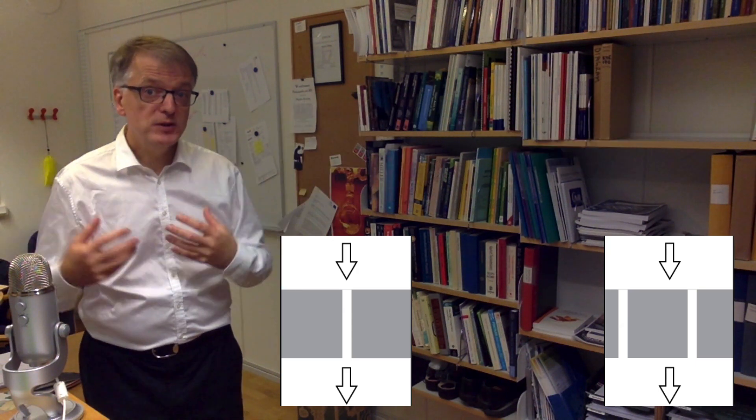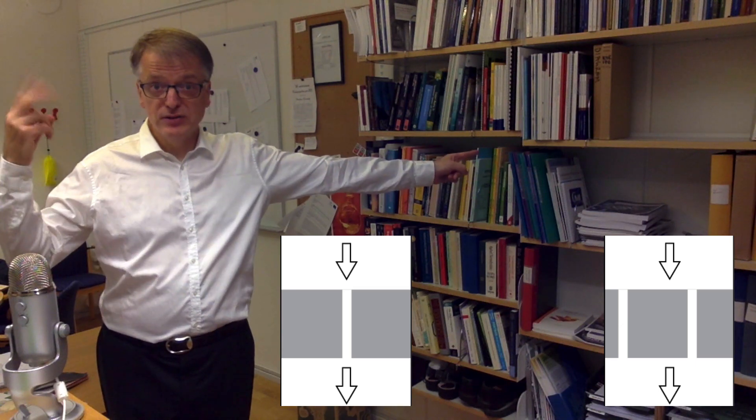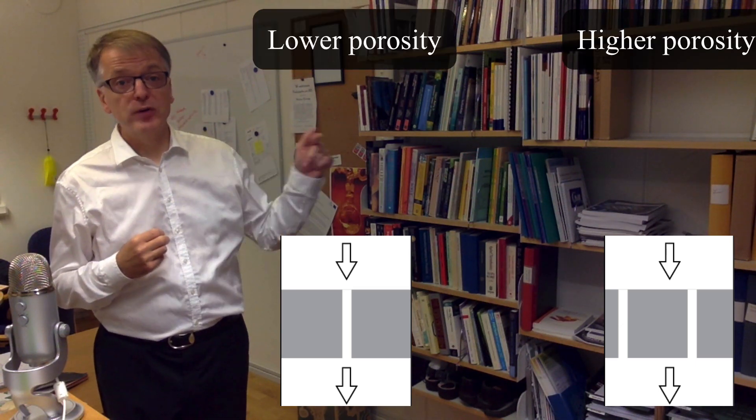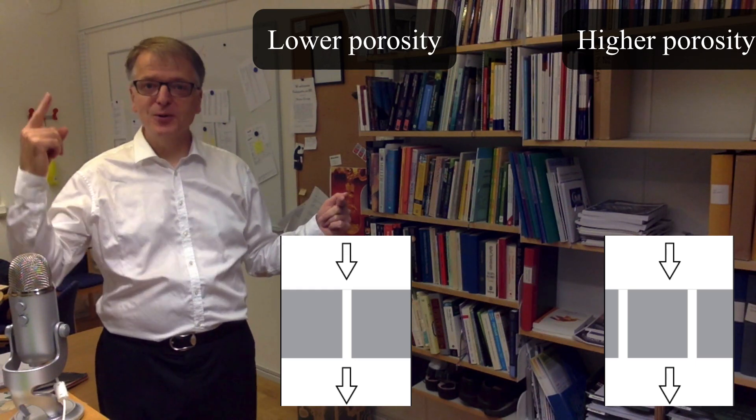Thus, the porous medium to the right with two channels has a porosity that is twice as high as the porosity of the porous media to the left, which has only one channel.